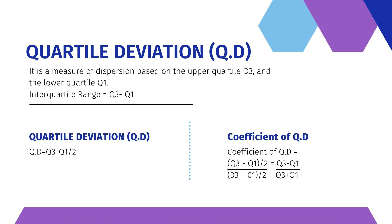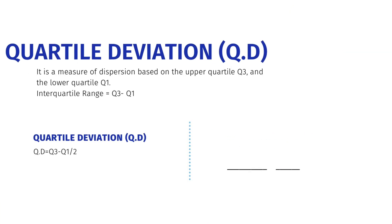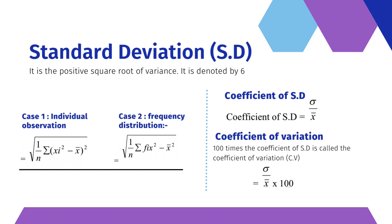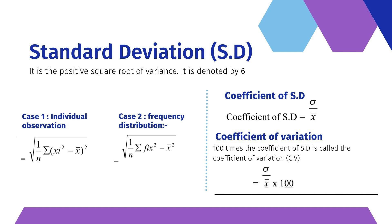Interquartile range equals Q3 minus Q1. Quartile deviation Q.D. and coefficient of Q.D. are derived from this. Standard deviation (S.D.) is the positive square root of variance, denoted by sigma, for case one individual observations and case two frequency distributions. The coefficient of variation (C.V.) is 100 times the coefficient of S.D.